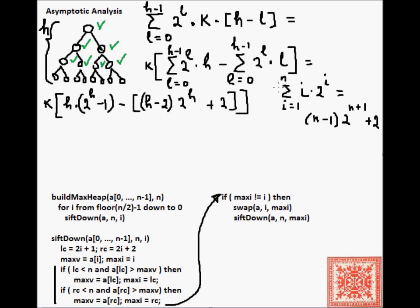If we plug in, instead of n, h minus 1, we get h minus 2, times 2 to the h, plus 2.